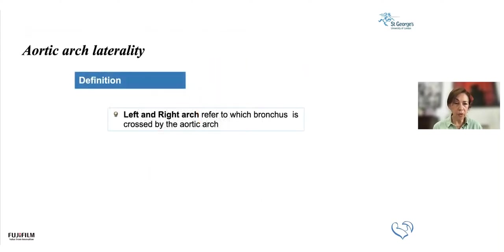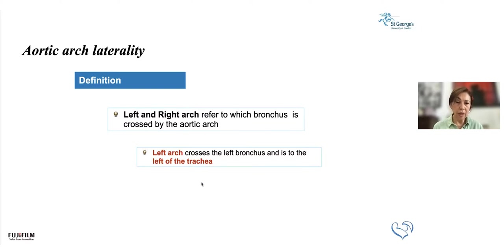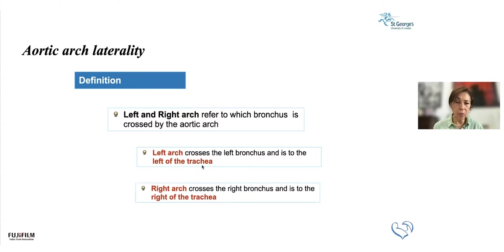Setting aside embryology, let's find a better way of defining laterality applicable to scanning the fetus or child. The definition of arch laterality refers to which bronchus is crossed by the aortic arch. A left arch crosses the left bronchus and sits to the left of the trachea. A key point of reference here is the trachea, as it is postnatally on the chest x-ray. The right arch crosses the right bronchus and is to the right side of the trachea. This is a good reference because in the fetus the trachea is fluid-filled and therefore shows very nicely on ultrasound.